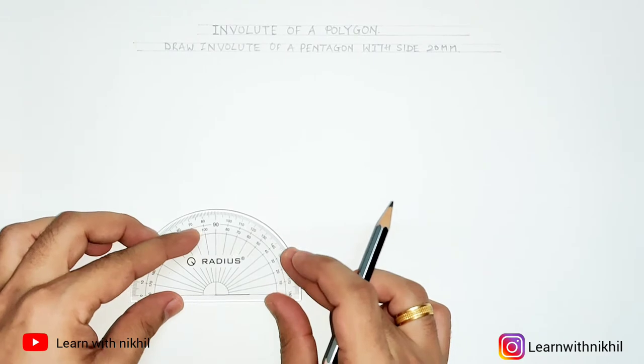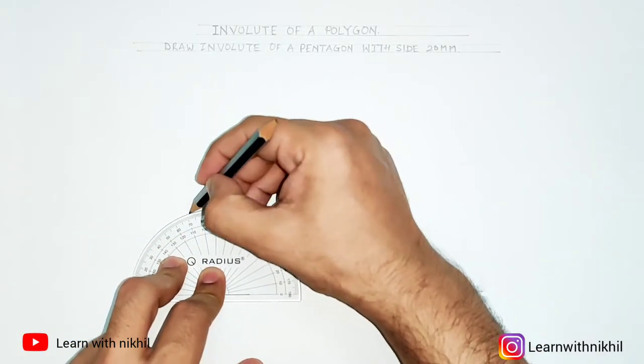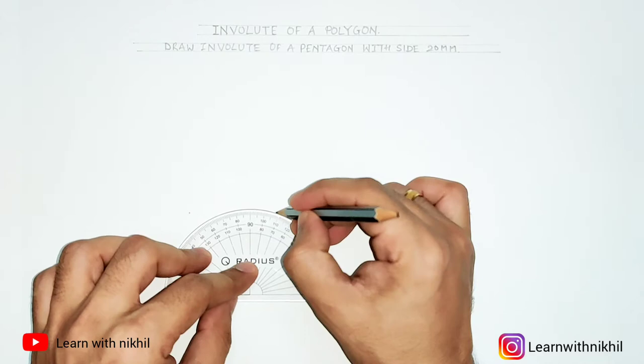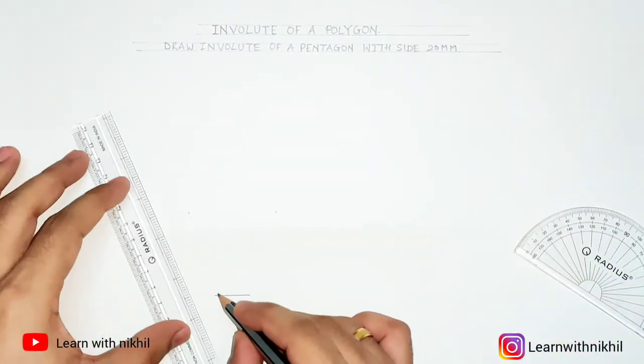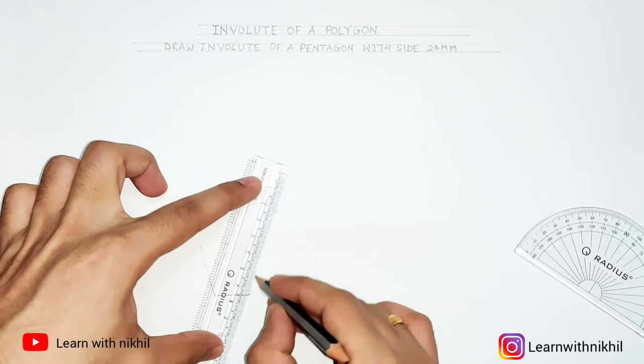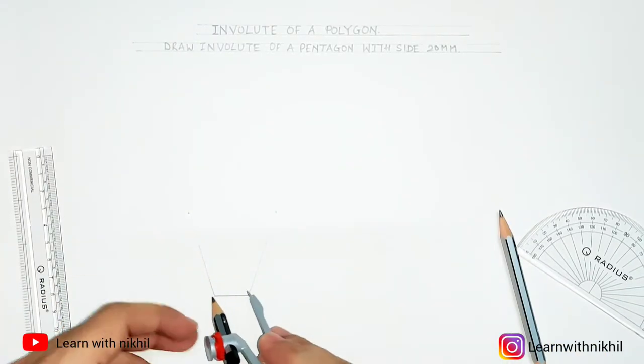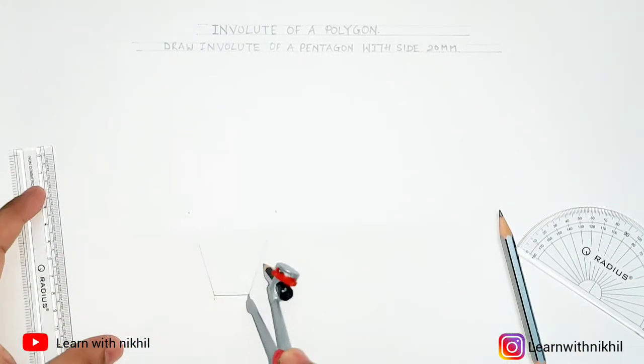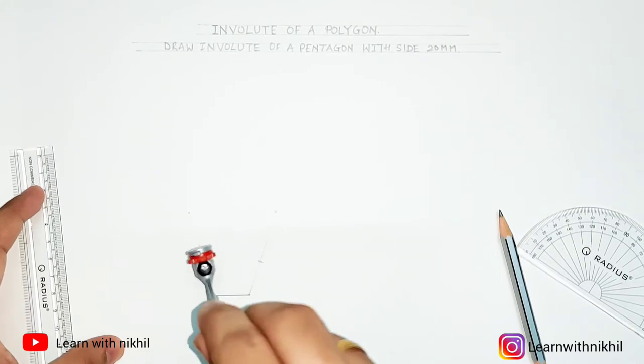First step, we will draw a pentagon with side 20 millimeter. You know we have studied to draw a pentagon. The angle of pentagon is 108 degrees and all the sides are equal. So with the compass 20 millimeter, we are drawing a pentagon.